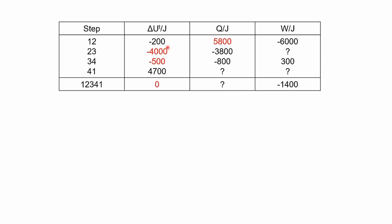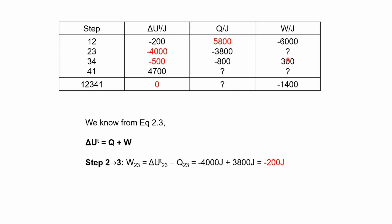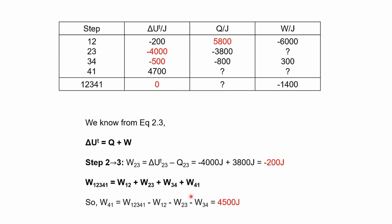Now for step 2 to 3, we know ΔU, Q is given, and we just need W. Using equation 2.3 — ΔU = Q + W — we find W for step 2 to 3 is minus 200 joules. We've also been given W for the whole process, which is minus 1400. Since W is not a state function, W for the whole process is the sum of the individual four steps, so we can determine W for step 4 to 1.